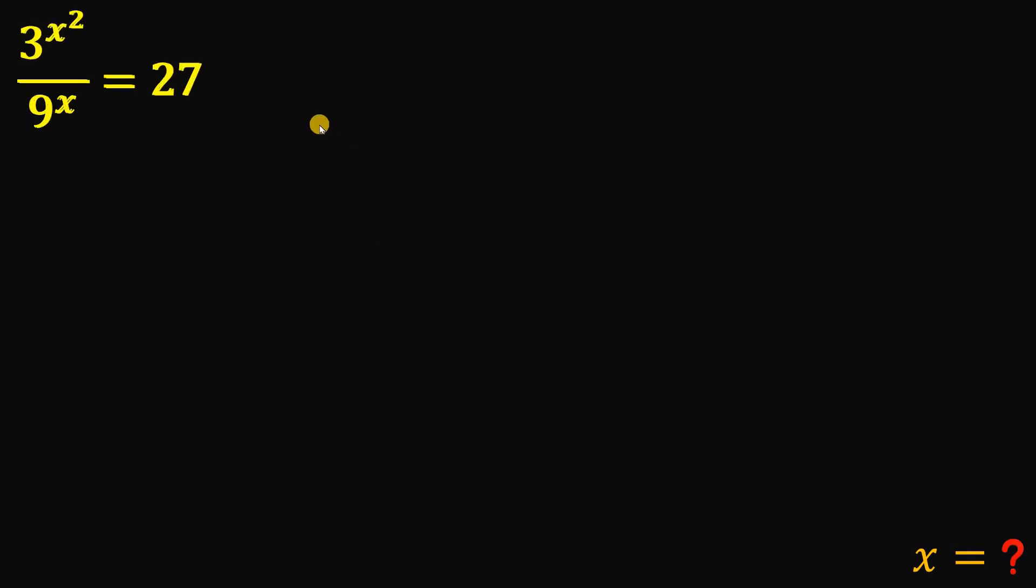So, given this equation, we have 3x squared over 9 raised to the power of x equals 27. Then the goal is to find out the value of x. So what we're going to do is to notice this 9 and 27, because 9 and 27, we can rewrite this as a power of 3. Because 9 is 3 raised to the power of 2 and 27 is 3 raised to the power of 3.